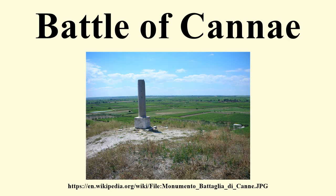Paulus, however, was opposed to the engagement as it was taking shape. Unlike Varro, he was prudent and cautious, and he believed it was foolish to fight on open ground, despite the Romans' numerical strength. This was especially true since Hannibal held the advantage in cavalry. Despite these misgivings, Paulus thought it unwise to withdraw the army after the initial success, and camped two-thirds of the army east of the Aufidus River, sending the remainder to fortify a position on the opposite side. The purpose of this second camp was to cover the foraging parties from the main camp and harass those of the enemy.